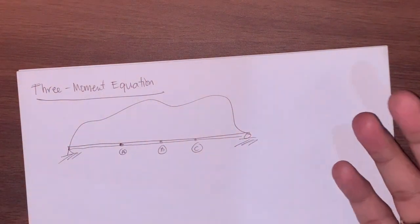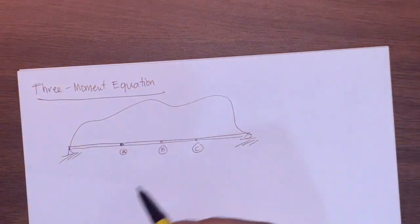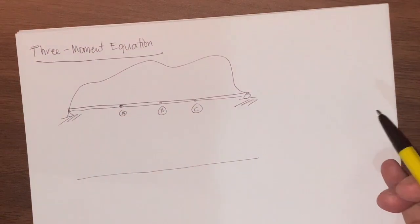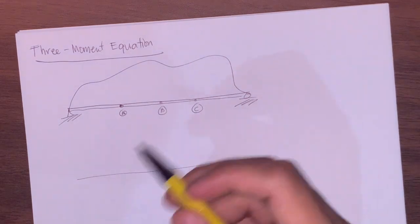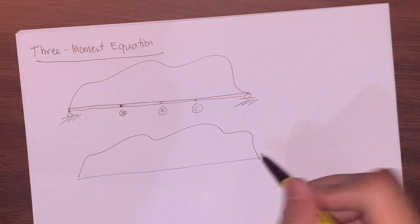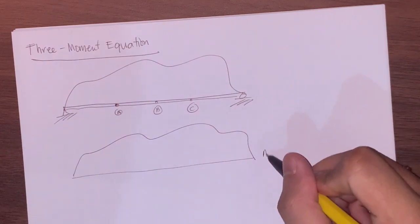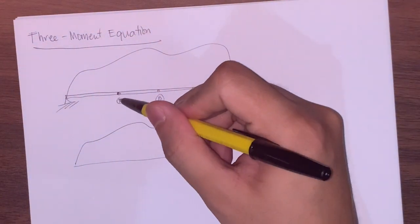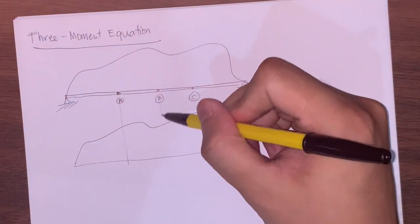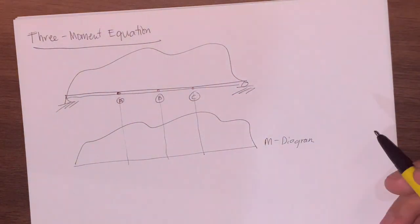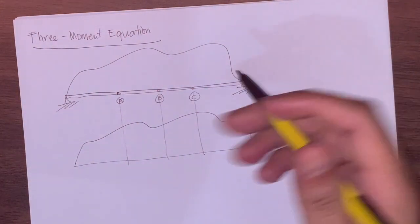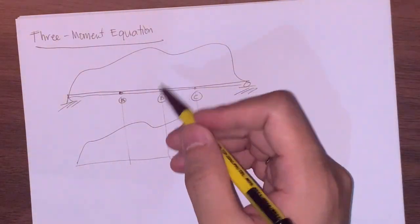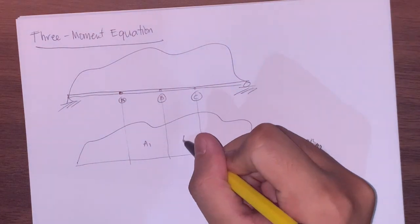This beam will have a corresponding moment diagram. Let's say this is your moment diagram. Let's project those points and name the areas of the moment diagram under these two segments: this is A1 and this is A2. We'll use L1 for the length of segment AB and L2 for the length of segment BC.